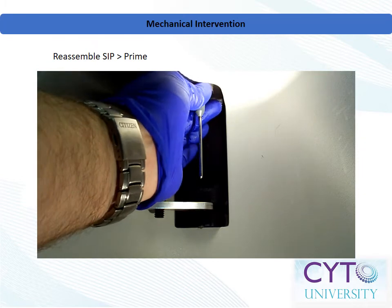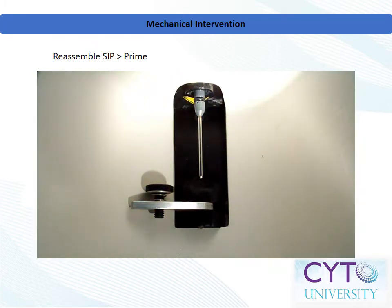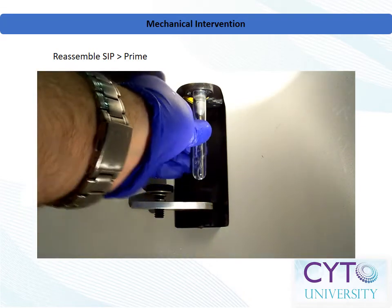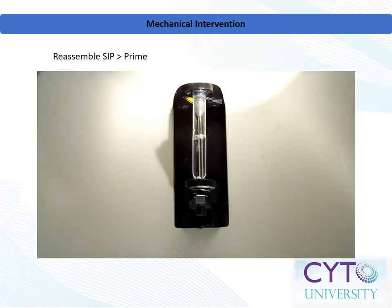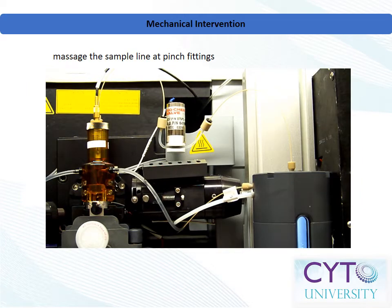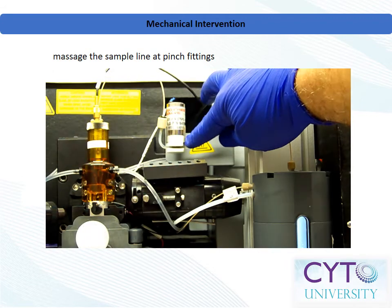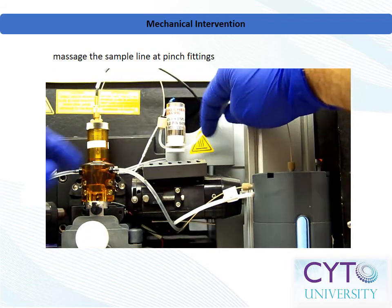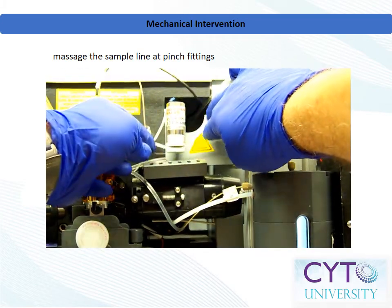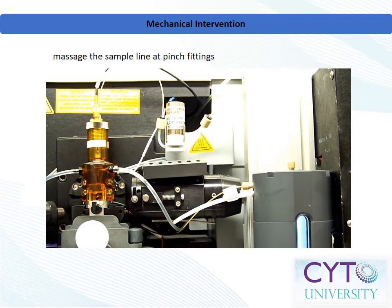At this point, you will want to prime the instrument to remove air from the flow cell. On some systems, the entire sample injection line can be replaced in the event of a major clogging event. In this example, sample delivery is controlled by a pinch valve, which may be a point of accumulation for clogs. Prior to replacing the entire line, consider massaging the tubing at the pinch valve in order to release the clog.